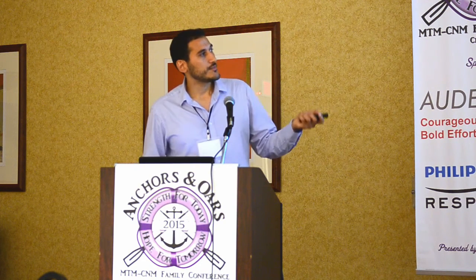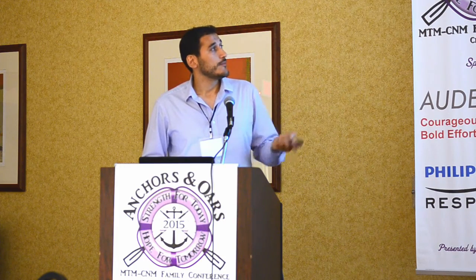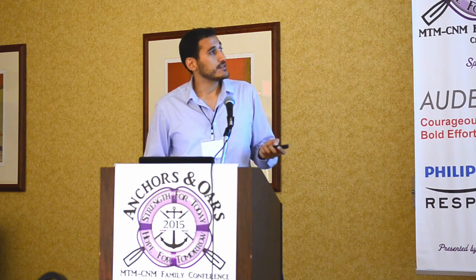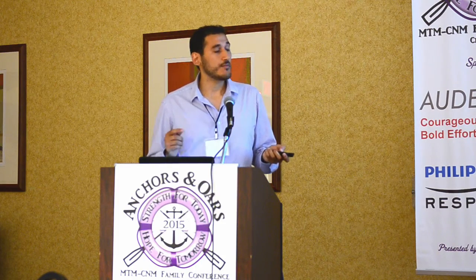As you may know, almost all patients are in wheelchairs, so evaluating upper limb strength and motricity is really important. We will evaluate strength, motricity, and activity of the upper limb using tools validated by the Institute of Myology in France: strength through the Myogrip and Myopinch, motricity by the Mole Plate, and activity through a bracelet called Actimyo. These tools have high precision, can be used in both ambulant and non-ambulant patients, and have already been tested in other neuromuscular disorders like Duchenne.